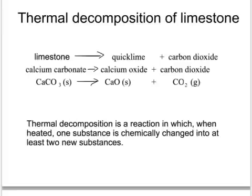The quicklime, once treated with water to make slaked lime, is used by farmers to neutralise acid soil, and by the water board to treat drinking water to make it neutral after adding chlorine.